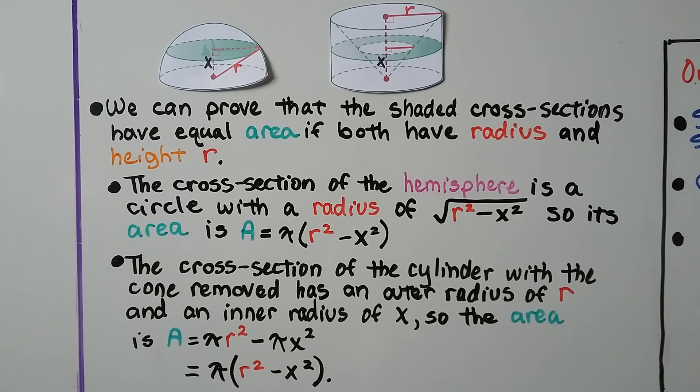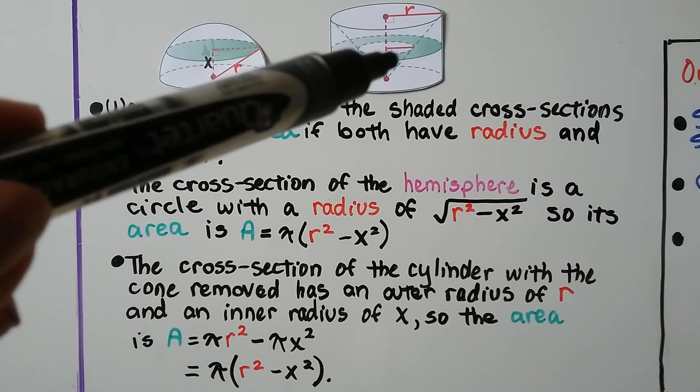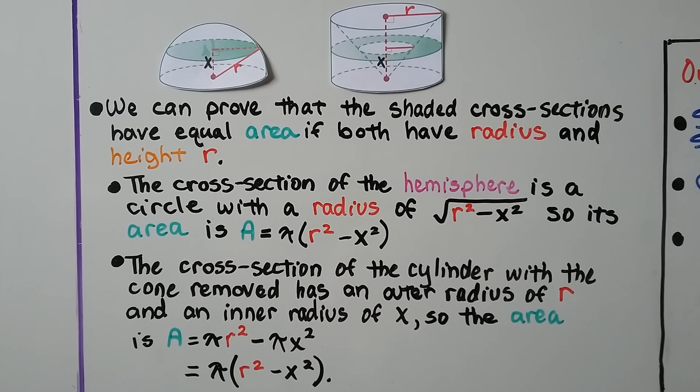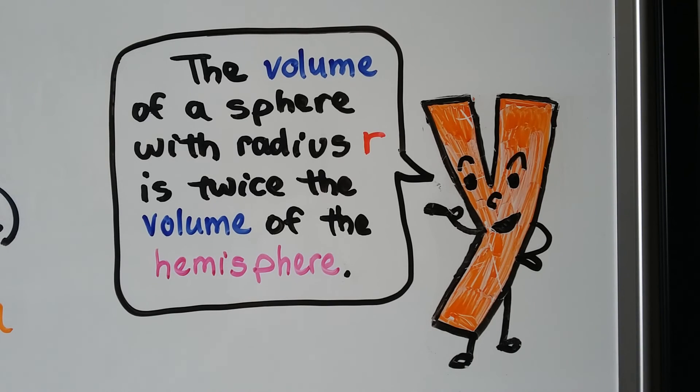And an inner radius of x. So, the area is a equals pi r squared minus pi x squared. And we can pull that pi out and put it out here on the parentheses, and we can say pi times radius squared minus x squared.